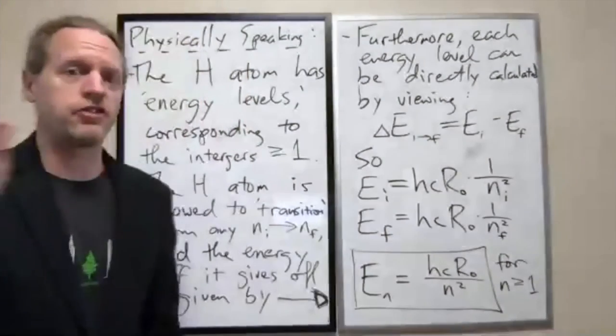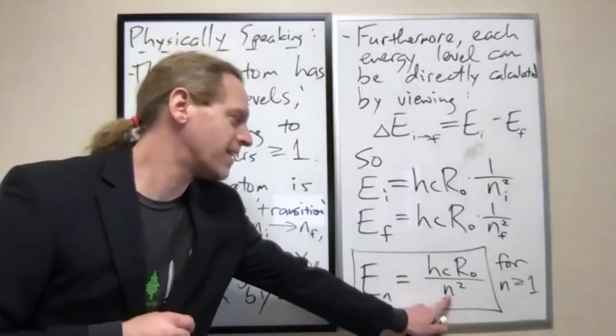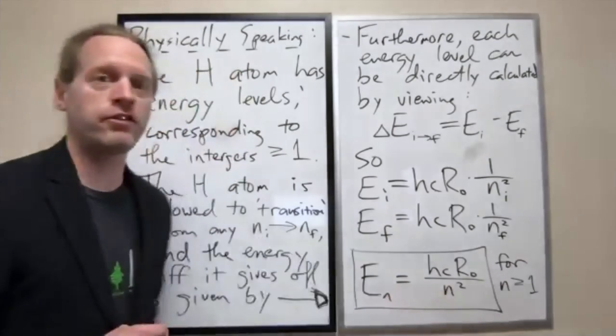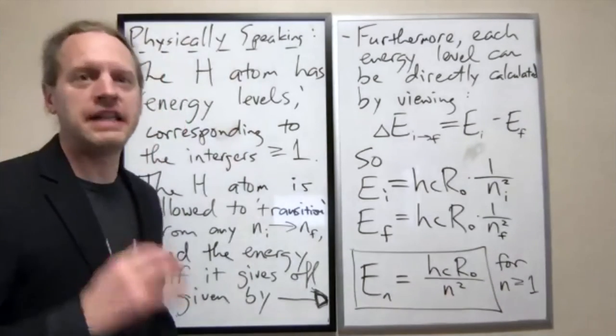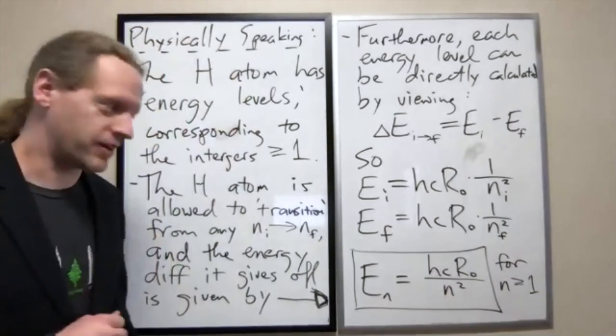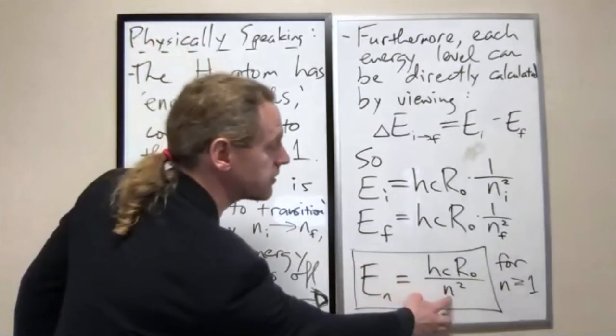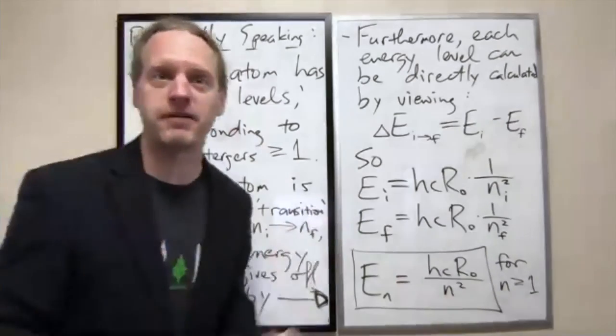It corresponds with integer multiples. The only energies that it is allowed to have are the solutions to this equation for which N is an integer. It is not allowed to have arbitrary amounts of energy. The only energies that it's allowed to have are precisely mapped to the integers and nothing in between. This is quantum mechanics at its most fundamental.